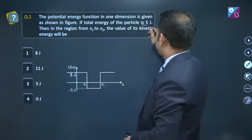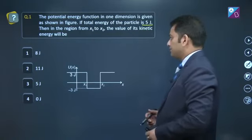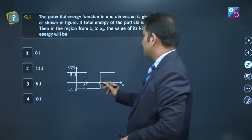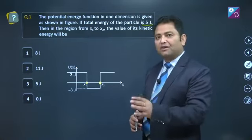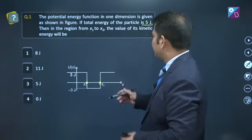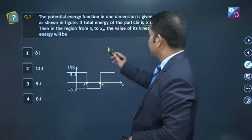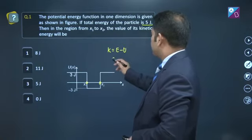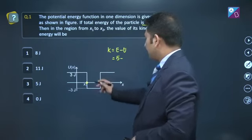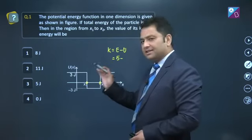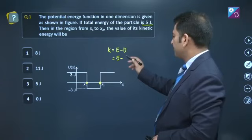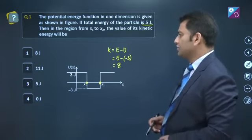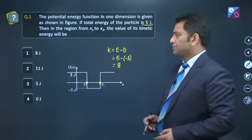The question asks: total energy of the particle is 5 joules. In the region from x1 to x2, we need to calculate the value of kinetic energy. Simple, kinetic energy equals mechanical energy minus potential energy. Mechanical energy is 5 joules, and between x1 and x2, potential energy is minus 3 joules. So kinetic energy will be plus 8 joules, which is in option number 1.